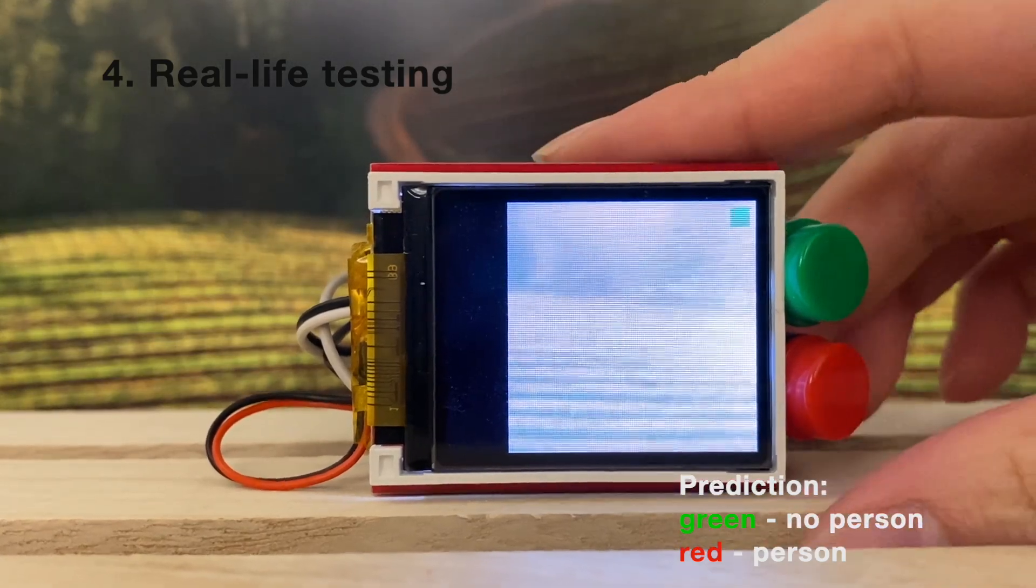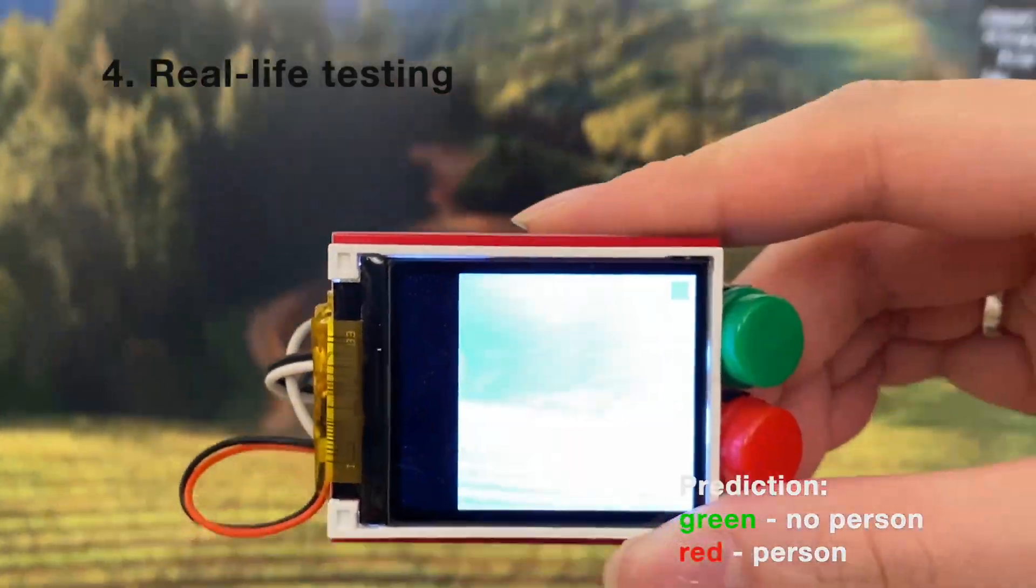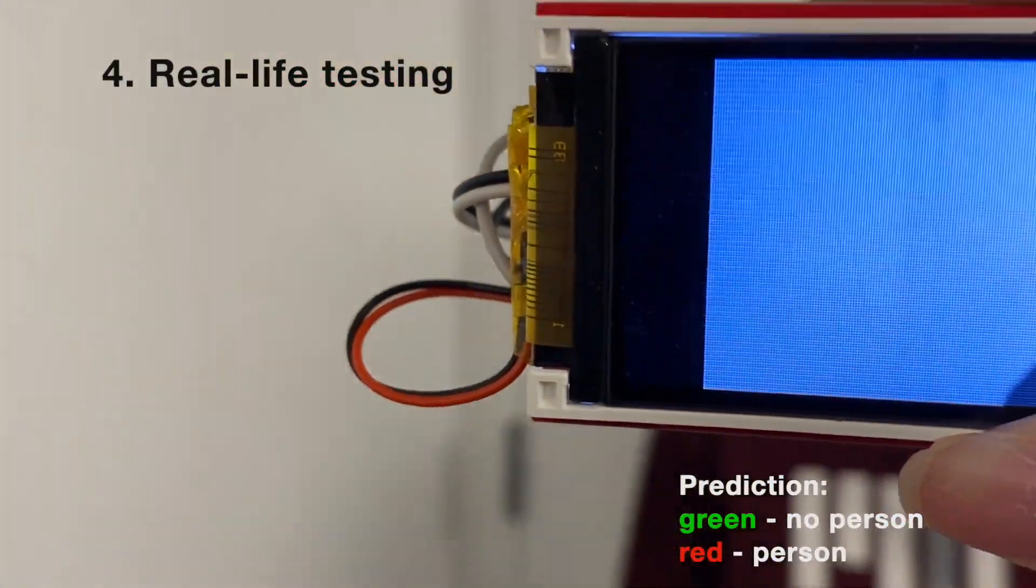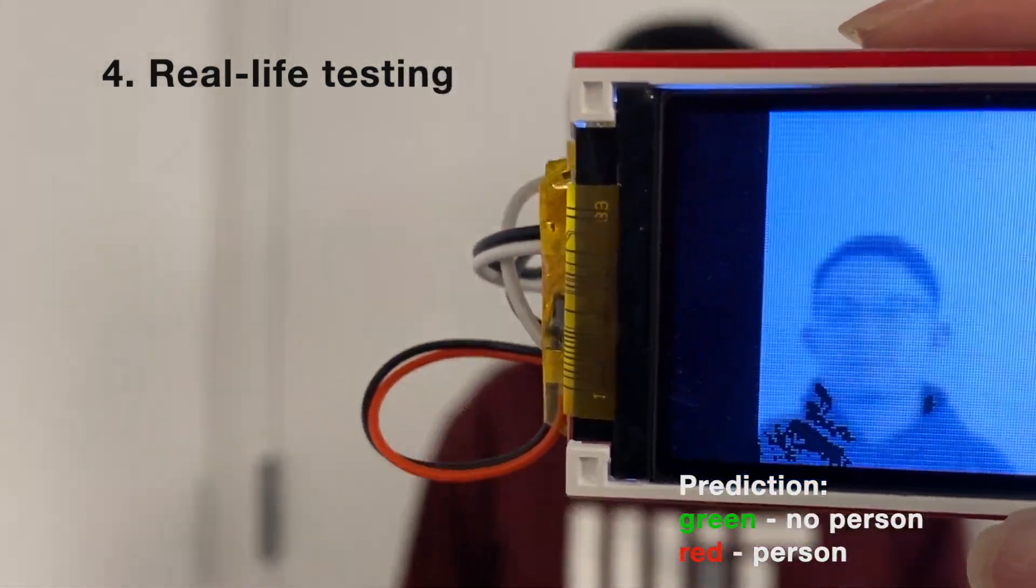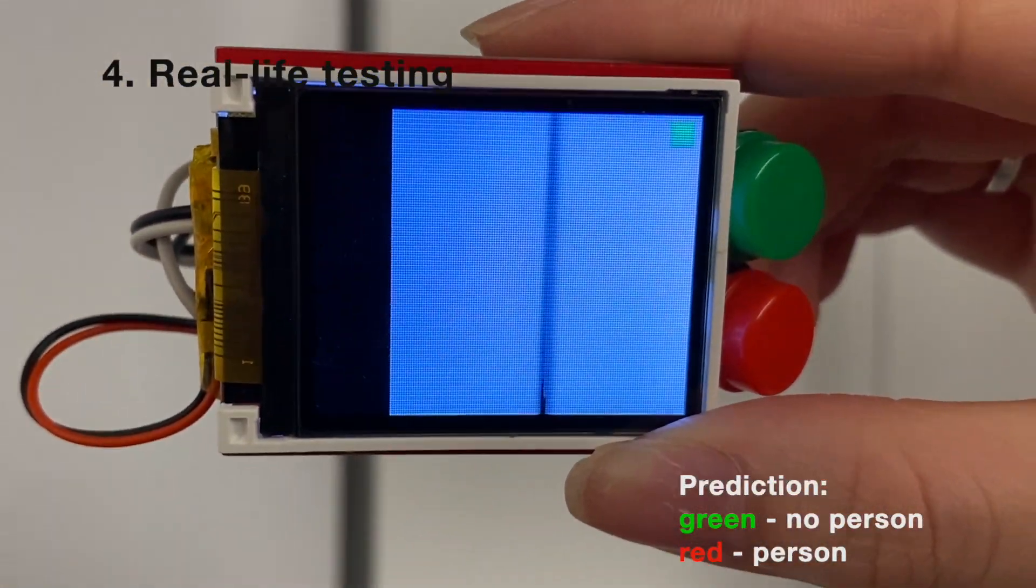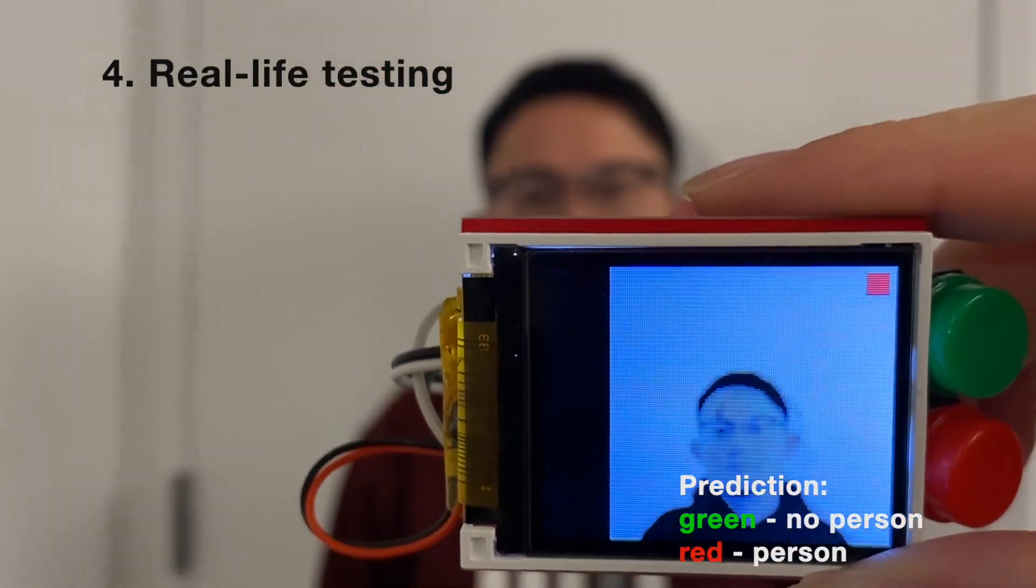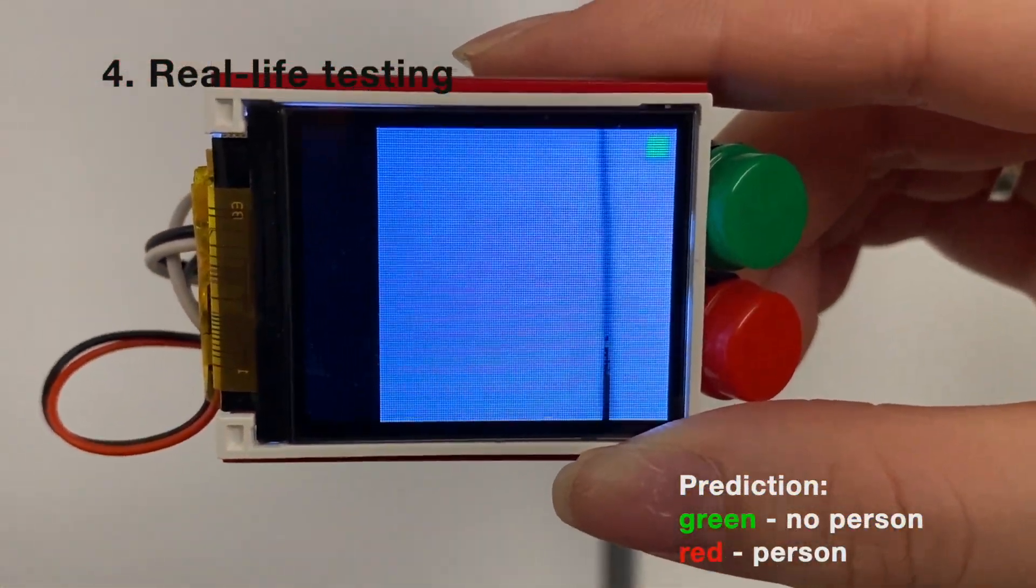Finally, we show that the trained model can be applied to real life. Here, we point the camera to a person, and he is successfully detected. Thanks for watching.